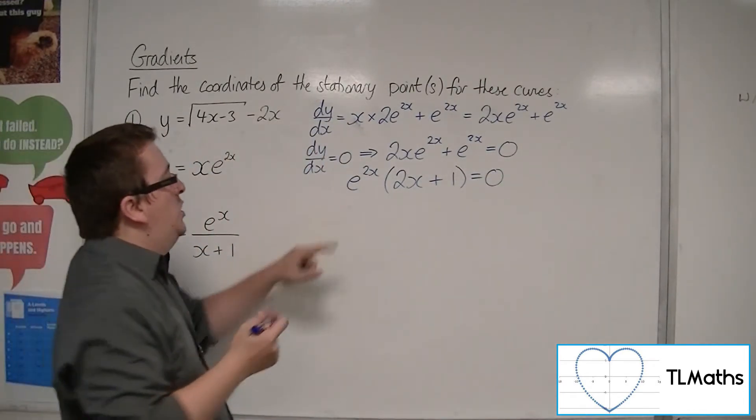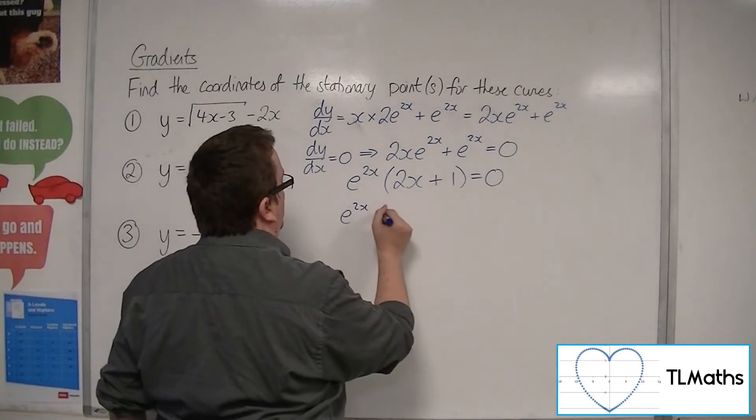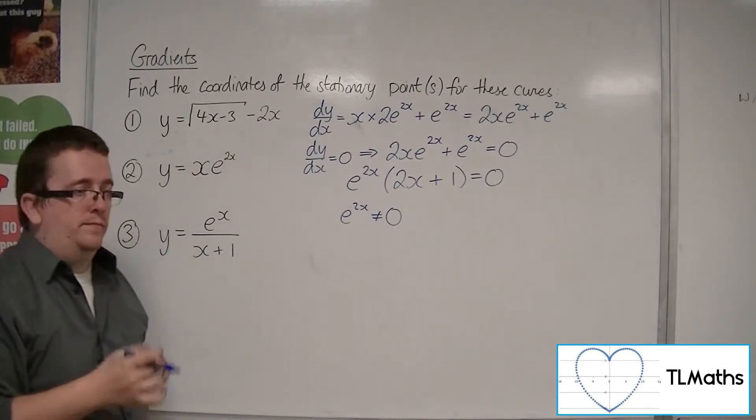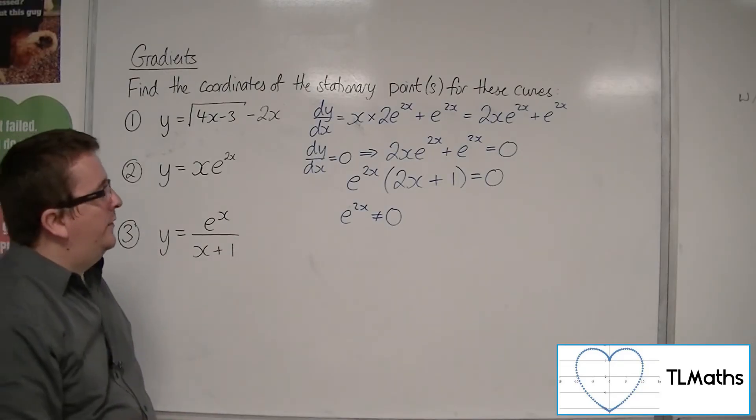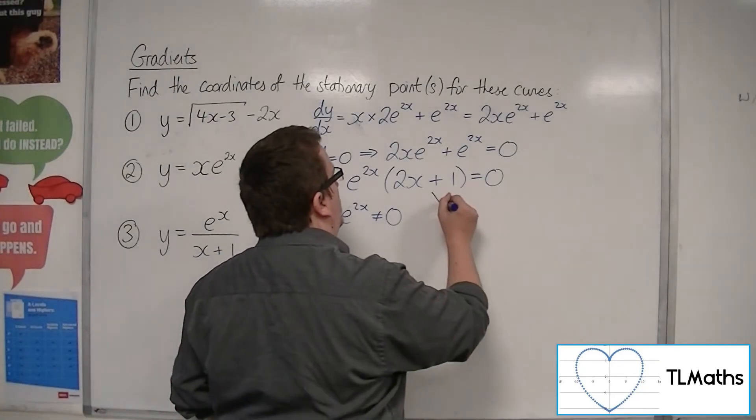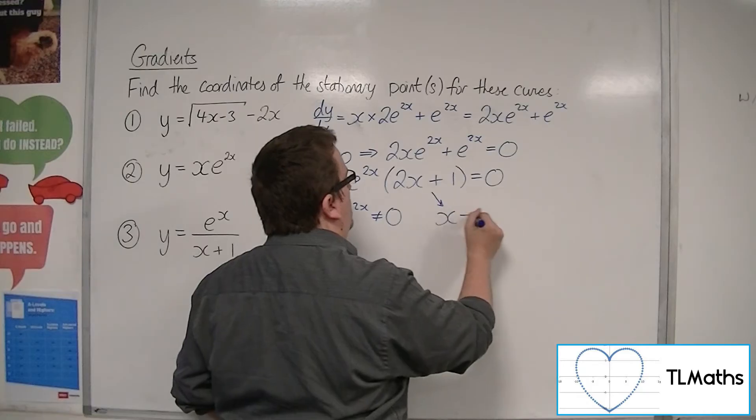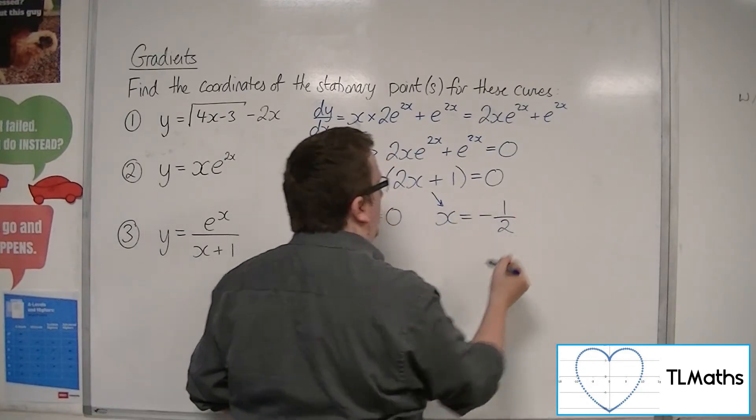Now e^(2x) cannot be equal to 0, because it has an asymptote at the x-axis. So the only solution is going to come from that bracket being 0, so x must be -1/2.